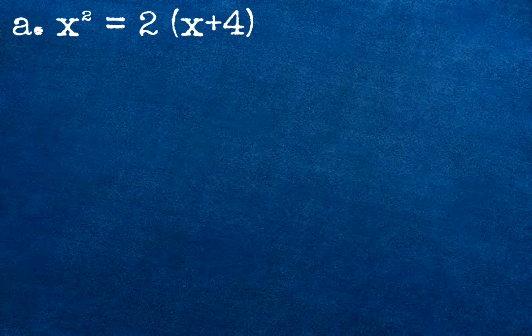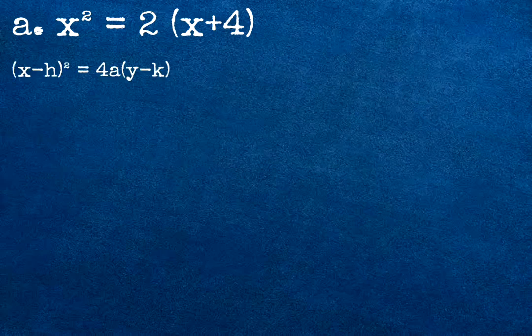Our example number 1 is x squared equals 2 times quantity x plus 4. The equation is written as quantity x minus h squared equals 4a times quantity y minus k. Our vertex is 0 and negative 4.